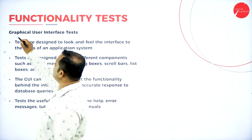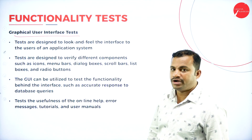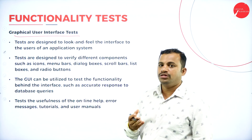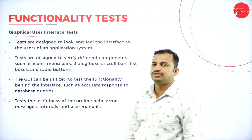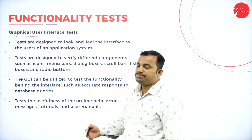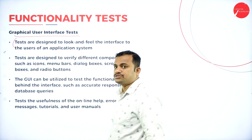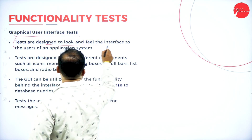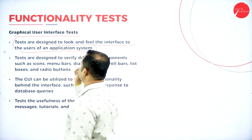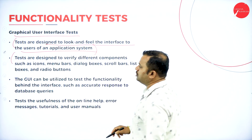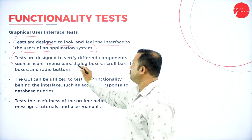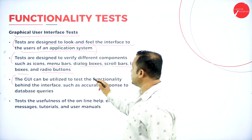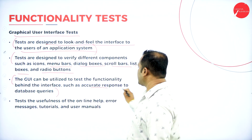Then, graphical user interface tests. The GUI includes text boxes, buttons, checkboxes, option buttons, and combo boxes — drag and drop options available on web forms or application forms — which can be used, designed and verified so that all requirements of stakeholders are met. These tests are designed to verify different components such as icons, menu bars, dialog boxes, scroll bars, list boxes, and radio buttons. The GUI can also be utilized to test the functionality behind the interface, such as accurate response to database queries.